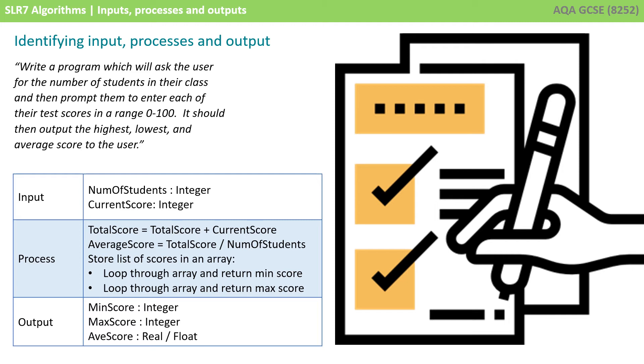Obviously they're going to need to input the number of students. So if there's five students, we need to be asking for five test scores, so that number needs to be input. We also need to be inputting the current score, so we're going to ask X number of times for a score, and each time that goes in, we're going to store that in a current score.